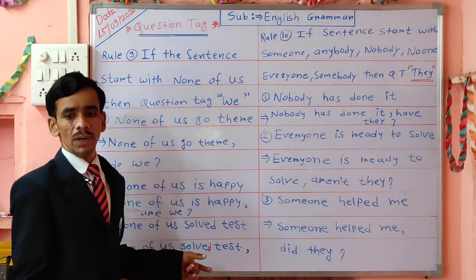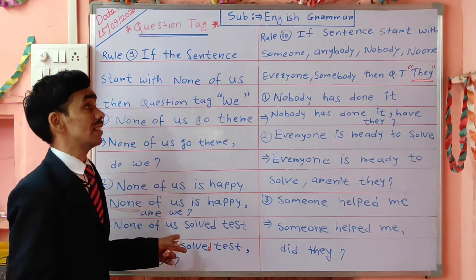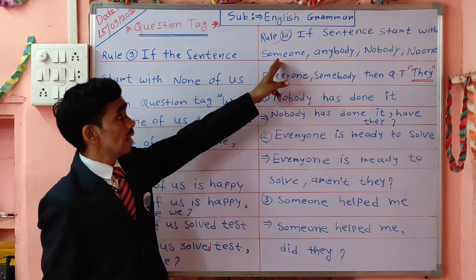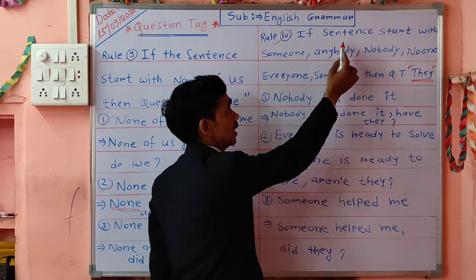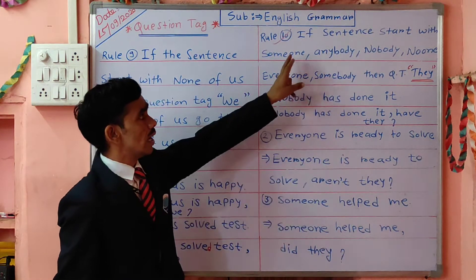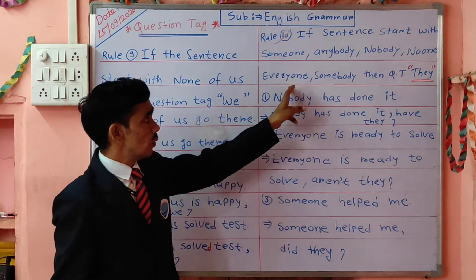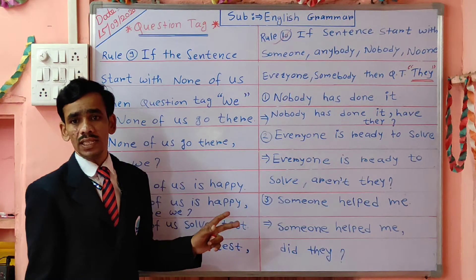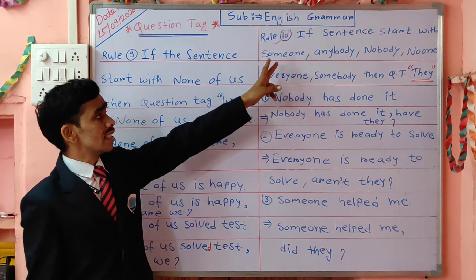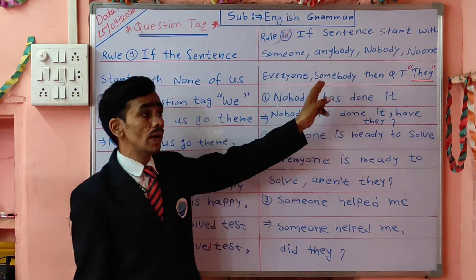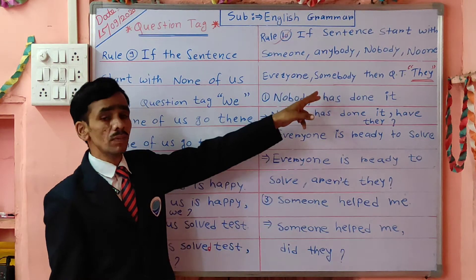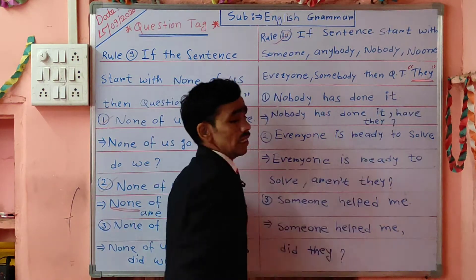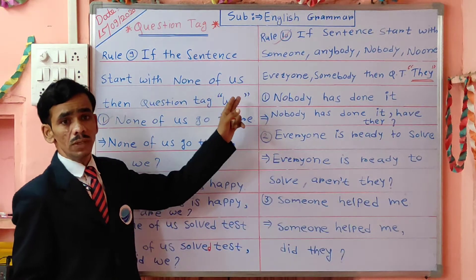Now we are going to see rule number 10. What is the next rule? If the sentence starts with 'someone,' 'anybody,' 'nobody,' 'no one,' 'everyone,' or 'somebody,' then in the question tag we take 'they' compulsory. It is also one of the most important rules.